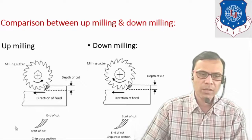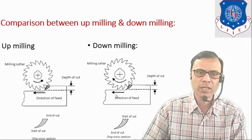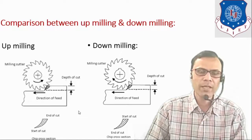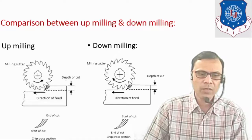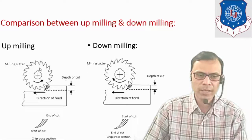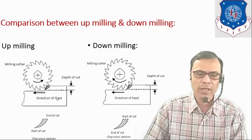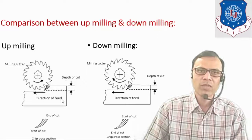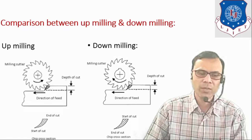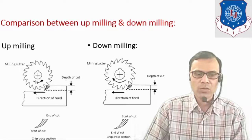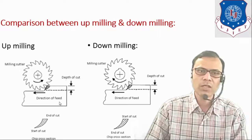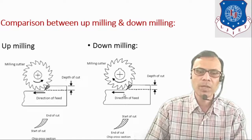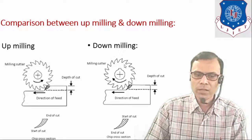In up milling, the direction of the cutter rotation is shown here — it is rotating in the anticlockwise direction. The feed for the workpiece is shown here, so the milling cutter is fed in the opposite direction to the direction of the workpiece feed. In down milling, the milling cutter is rotating in the direction of the feed of the workpiece.